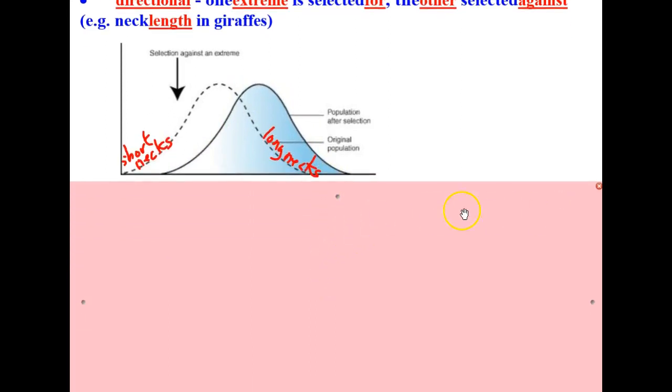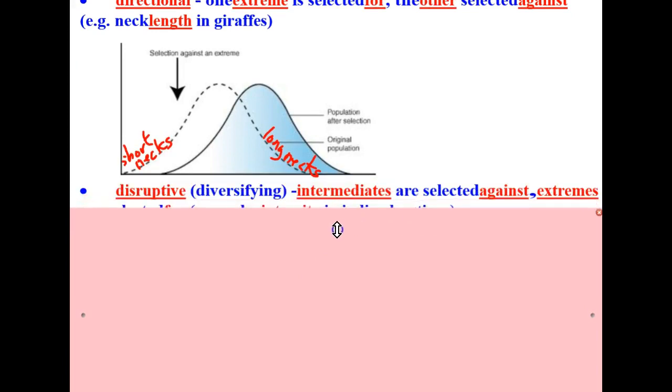Our third type of selection is called disruptive selection. Another term you may hear is diversifying selection. This one's interesting. It's where intermediates are selected against and the extremes are selected for. A great example is the color intensity in indigo buntings.